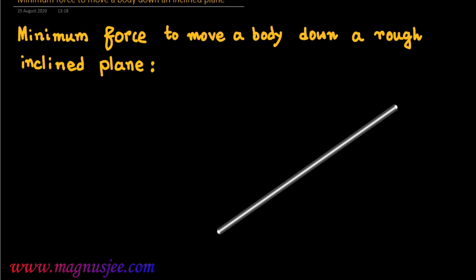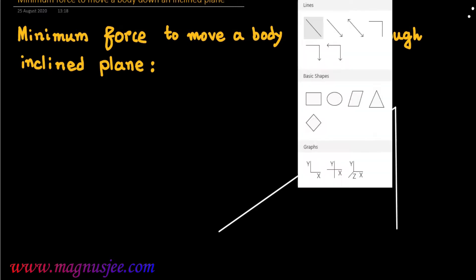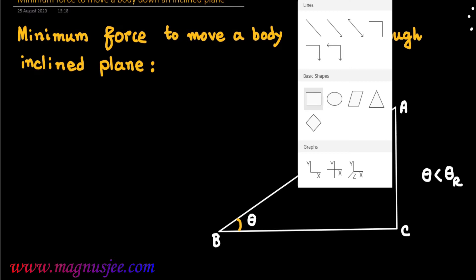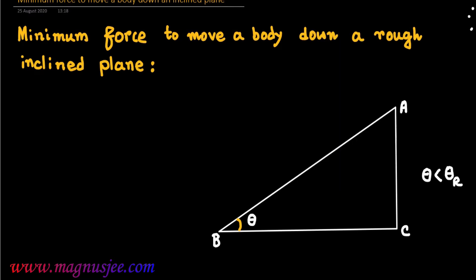An inclined plane is drawn. AB is the inclined plane, and theta is the angle of inclination of the inclined plane with respect to the horizontal plane. Theta is less than theta_R, meaning the angle of inclination is less than the angle of repose.